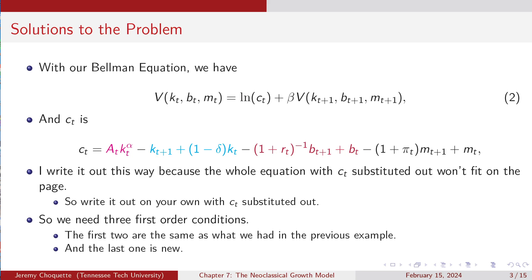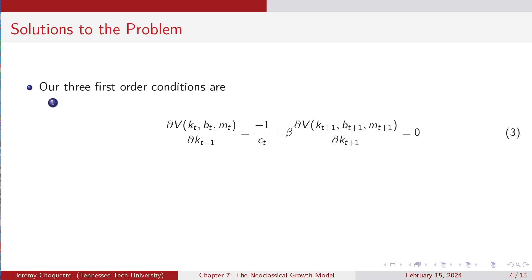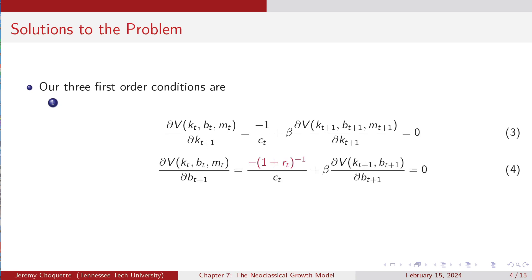We're going to need three first-order conditions. The first two are the same as what we had in the previous example — they'll be identical. The last one is the new one. With respect to capital, it's 1/C_t times negative 1 plus beta times the partial of V(K_{t+1}, B_{t+1}, M_{t+1}) with respect to K_{t+1} equals 0. The only thing that's changed from the previous example is there's one more argument in the V function — the money M — augmenting the arguments of V.